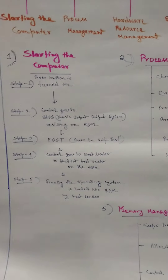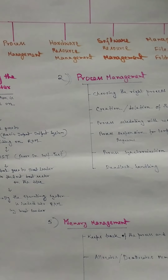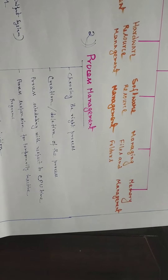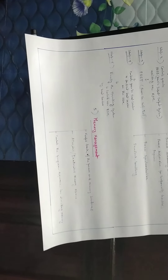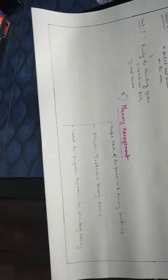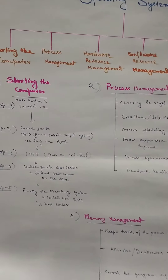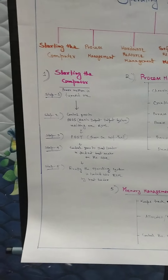This is the first function — operating system helps in starting up the computer. The other functions are process management, hardware resource management, software resource management, managing files and folders, and memory management. In the next video I will discuss process management, and in the third video I will discuss memory management. Please let me know whether you could understand or not, and if any confusion arises, you must ask your queries.